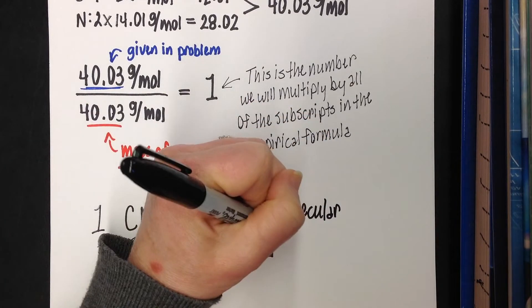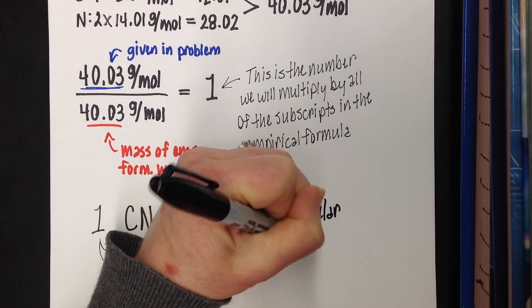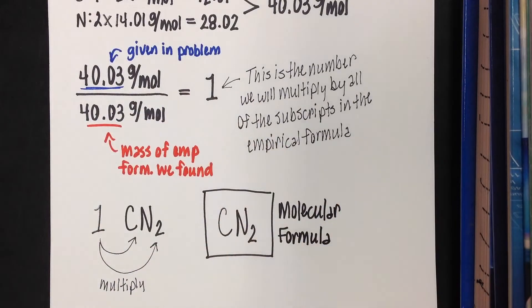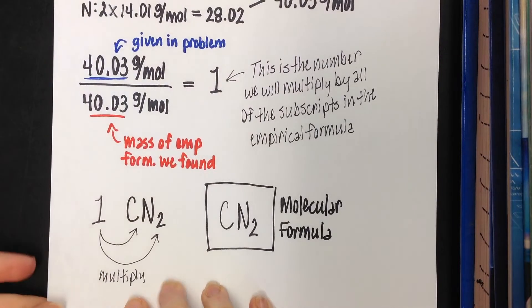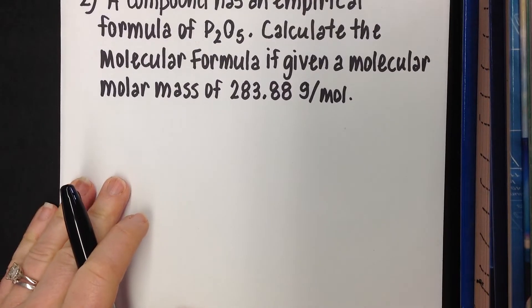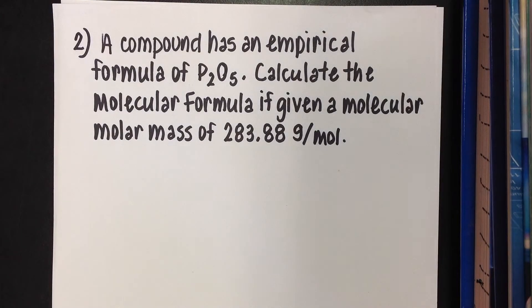Is the molecular formula always the same as the empirical formula? No. But occasionally they will be the same. Now let's look at an example where they are not the same. A compound has an empirical formula of P2O5. Calculate the molecular formula if given a molecular molar mass of 283.88 grams per mole.